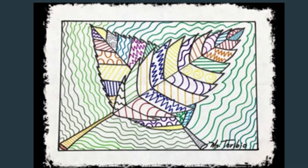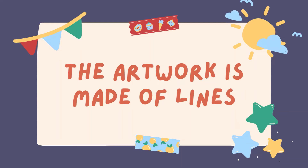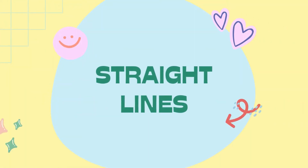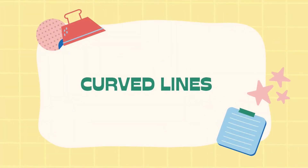What do you think is the picture made of? Very good! The picture is made of lines. Do you know that there are two kinds of lines? Yes, you are right. There are two kinds of lines, namely straight lines and curved lines.